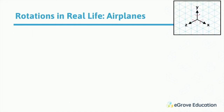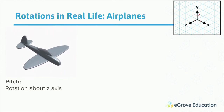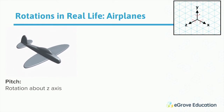We can look at real-life examples of why rotations are important — let's look at airplanes. When an airplane is taking off or landing, the nose goes up or down, and you can see that the airplane is rotating. In this case, it's rotating about the Z axis, going up and down. That's called pitch.